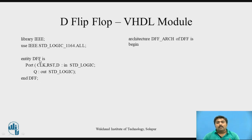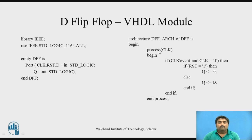After that, the third part: architecture. The syntax is 'architecture [architecture name] of [entity name] is', then 'architecture begin'. Inside the architecture, we write the behavior of the D flip-flop. Since we are using a clock, we write inside a process, with the sensitivity list containing the clock signal, then 'process begin'.